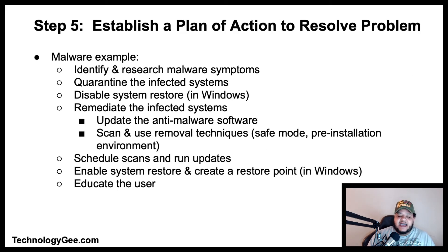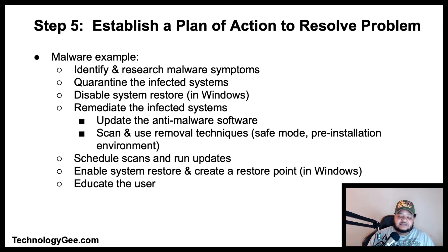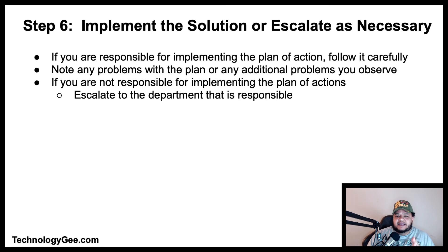Step five: establish a plan of action to resolve the problem and identify potential effects. Once you have identified the problem and discovered a solution, establish a plan of action. An example for dealing with a malware outbreak: identify and research malware symptoms, quarantine infected systems, disable systems restore in Windows, remediate infected systems by updating anti-malware software, scan and use removal techniques in safe mode or the pre-installation environment, schedule scans and run updates, enable system restore and create a restore point in Windows, and educate the user.